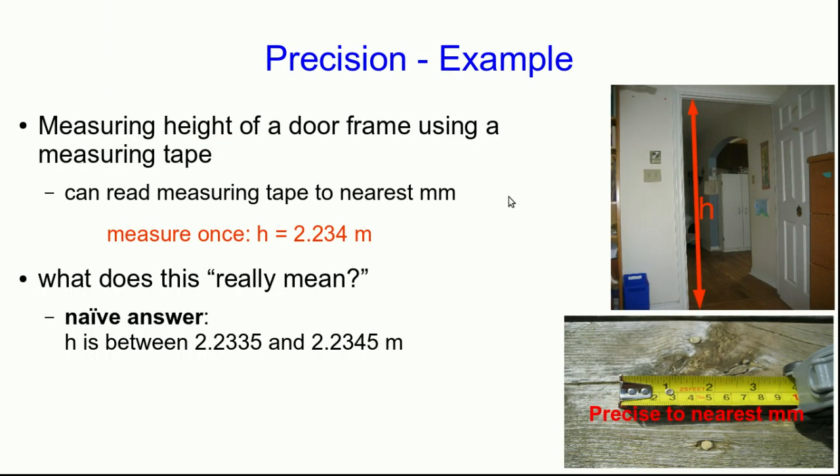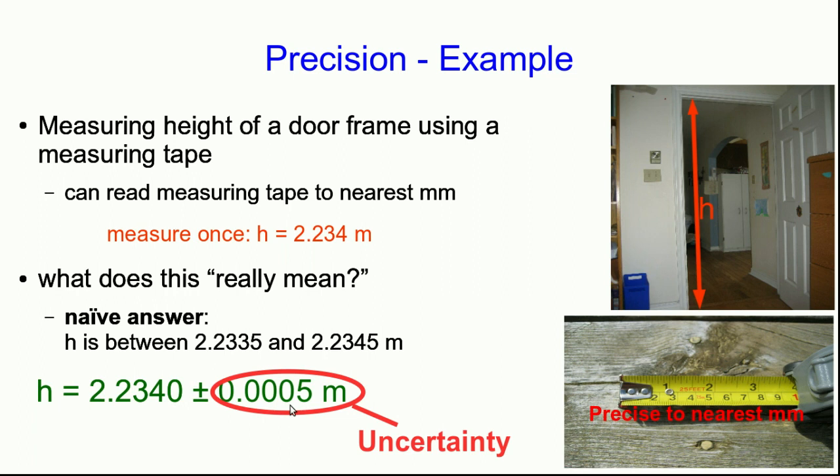So remember this example of measuring a door, where our naive measurement, based on the idea of the measuring tape being precise to the nearest millimeter, was this. And we could rewrite that this way, which now tells you that our measurement precision, that we've sort of guessed, is telling us that our height measurement has five significant figures, and the least significant figure has uncertainty in it.